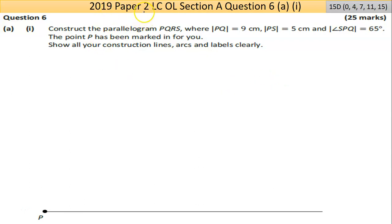Hi and welcome to the 2019 paper 2. This is question 6 of the Leaving Certificate Ordinary Level. Question 6 has 15 marks. I suggest you have a go at doing the construction. There's certain constructions you have to know - this will be one of the easier ones. It's asking us to construct the parallelogram PQRS where PQ is 9cm, PS is 5cm, and angle SPQ is 65 degrees.